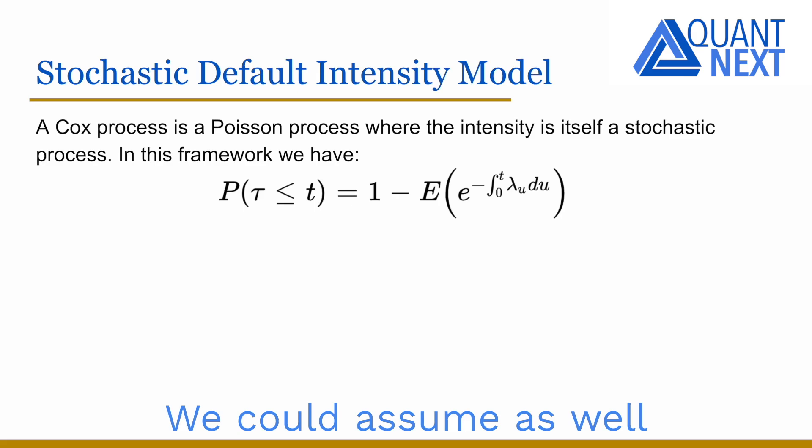We could assume as well that the default intensity is stochastic. A Cox process is a Poisson process where the intensity is itself a stochastic process.